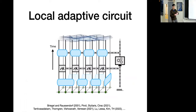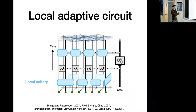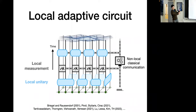Let's jump right into the first part. We want to consider a type of operation I'll call a local adaptive quantum circuit. A local adaptive circuit consists of both local unitary gates, local measurements, and most importantly, the ability to process the measurement outcomes and decide what to do at a later time step in the circuit — hence the name 'adaptive.' Based on the measurement outcomes, you can decide what unitaries and measurements to apply later in time.